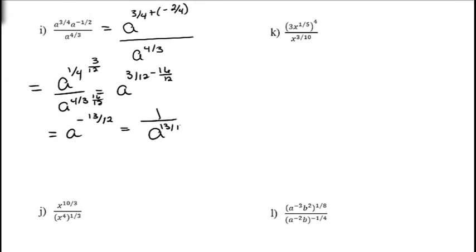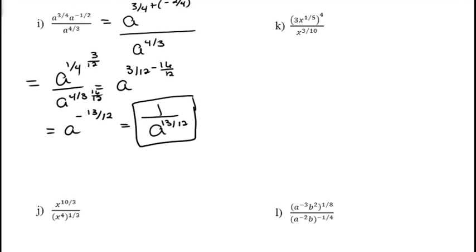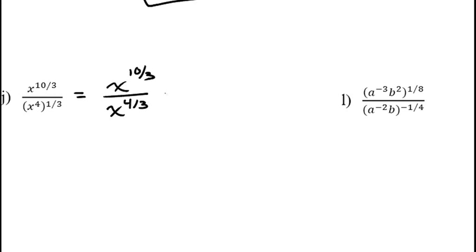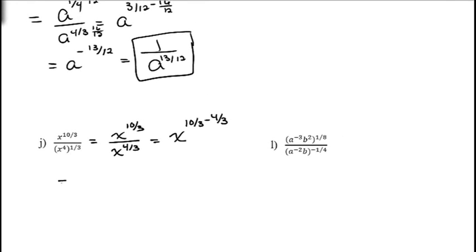For x to the 10/3 divided by (x to the 4th) to the 1/3: first handle the power raised to a power in the denominator — multiply 4 times 1/3 to get 4/3. Now divide: x to the 10/3 minus 4/3 equals x to the 6/3. Simplifying 6/3 gives 2, so the result is x squared.